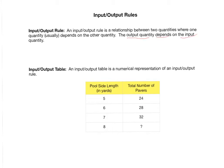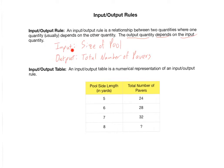We have pool side length as one quantity and total number of pavers as the other. Which is the input and which is the output? The output depends on the input, so the number of pavers you need depends on the size of the pool. The size of the pool is the input — specifically one side length in yards, since it's a square — and the number of pavers is the output.